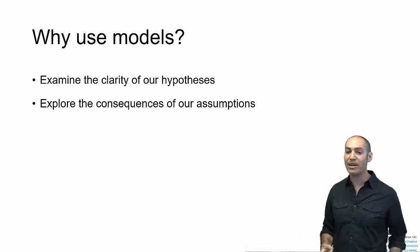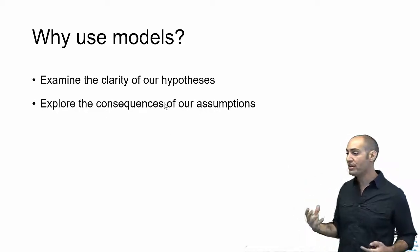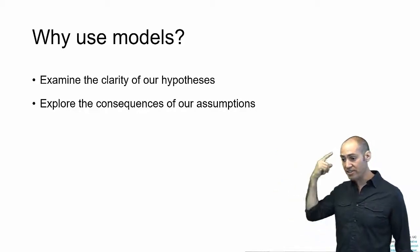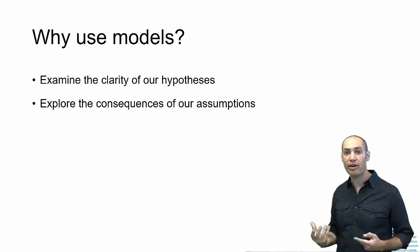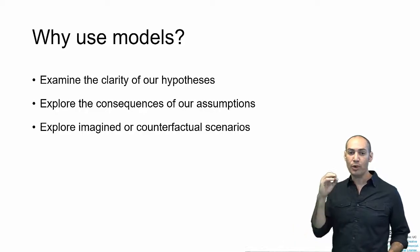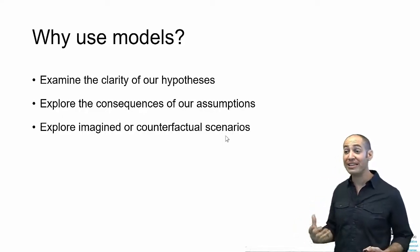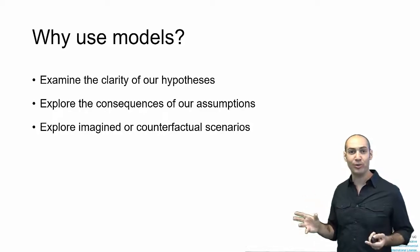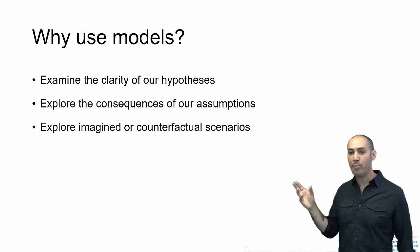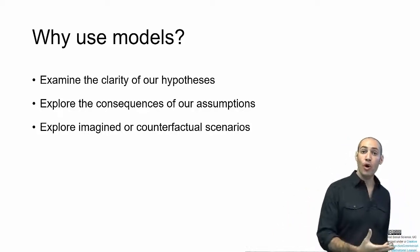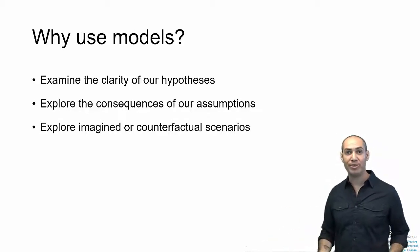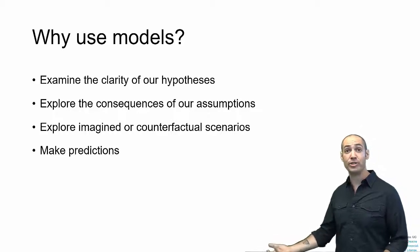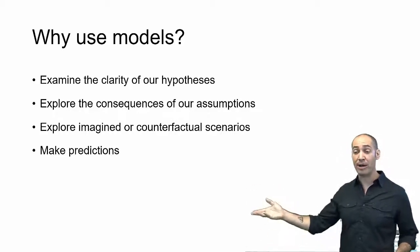Once we do that, we can also use models to examine the consequences of our assumptions. We can write down a model that says we assume that individuals behave this way and interact in this way, but in a very complex system, it's not always easy to think about what are all the consequences of those assumptions. We can use a model to explore those consequences. We can also explore imagined or counterfactual scenarios, things that haven't happened or never will happen or might have happened. When we do experiments, we're limited to what is actually in the world. But we can build a model and set it up in a certain way that represents a kind of scenario that might have been or might be, and we can explore what would happen or could have happened in ways that we can't do with experimental data.